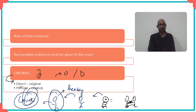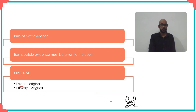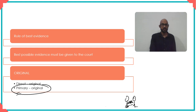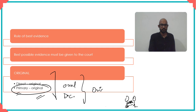So even in the case of oral evidence, when you say it should be direct, you're basically asking for it to be original. And when you talk of primary evidence, the meaning of 'primary' itself means the original document. So for both oral as well as documentary evidence, it is desirable that we have an original source.